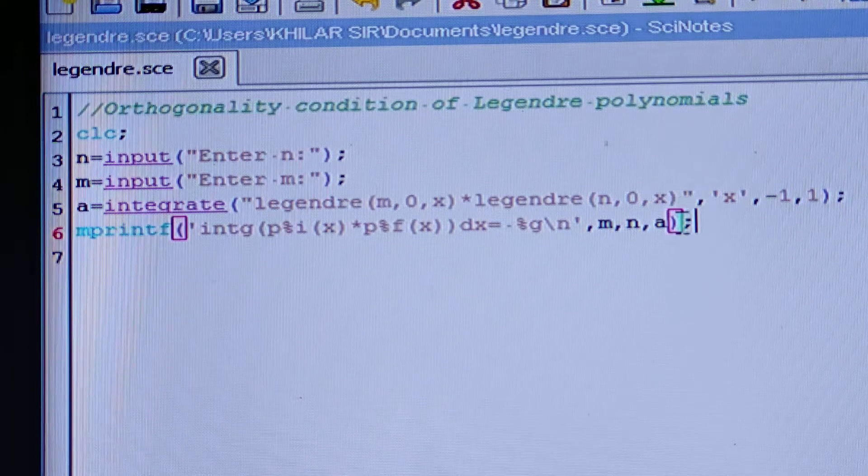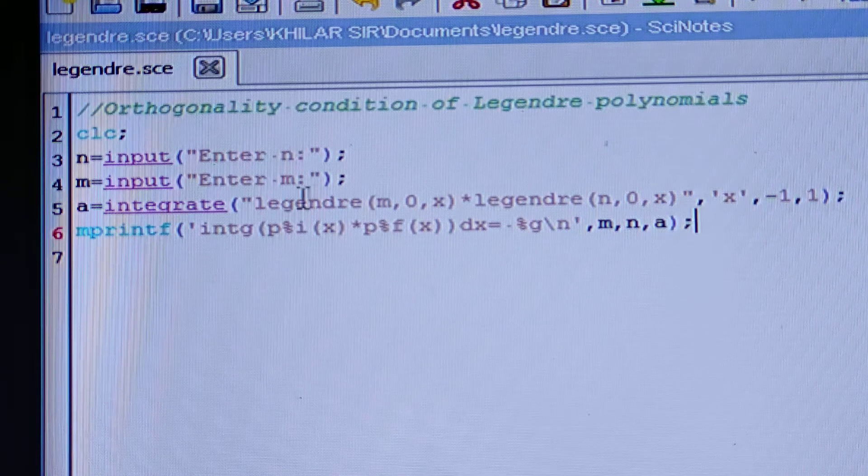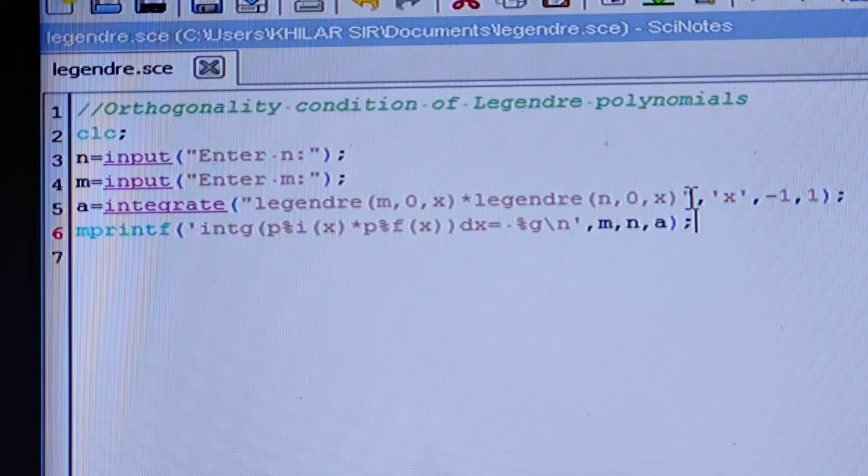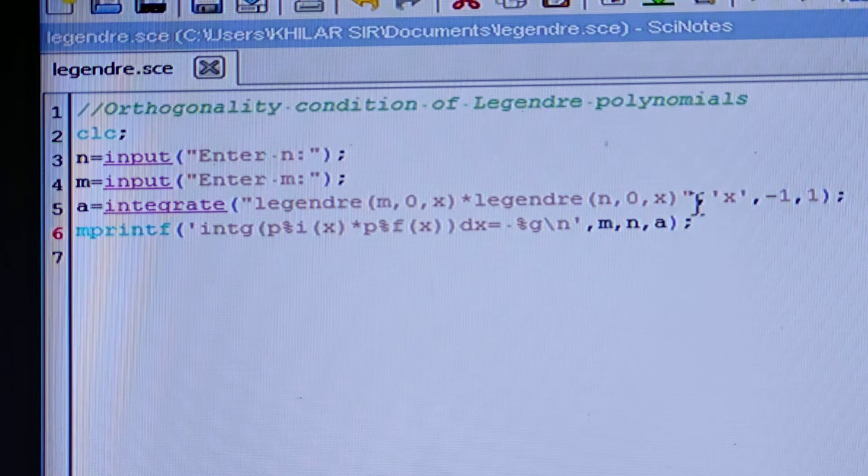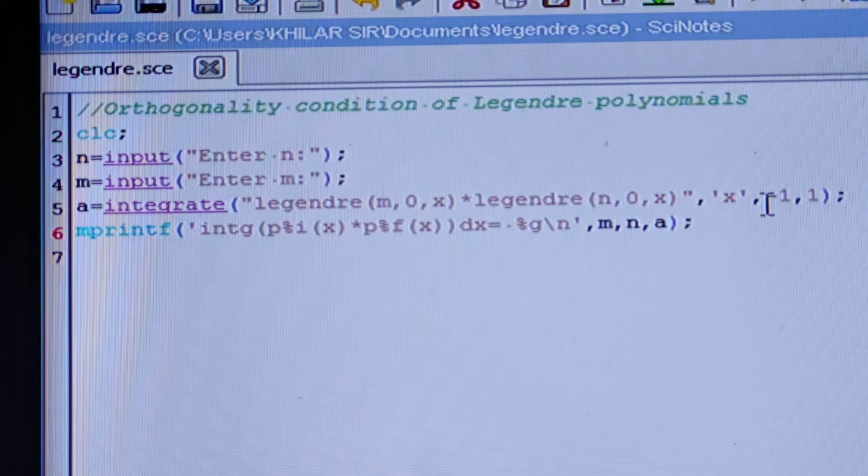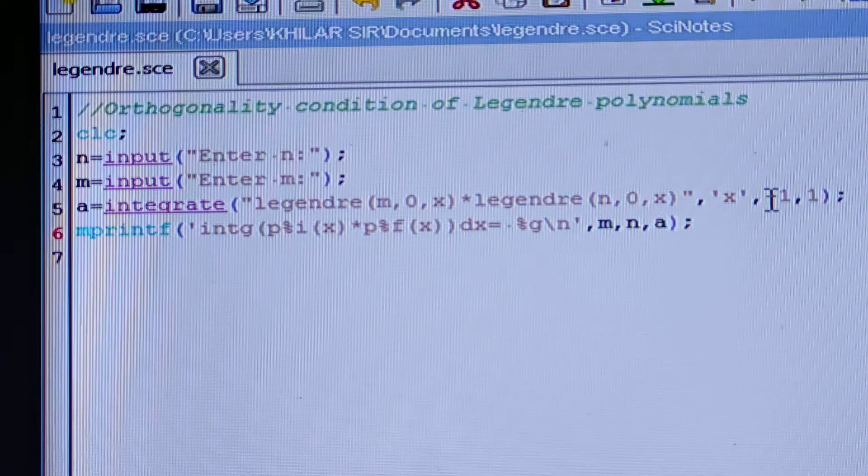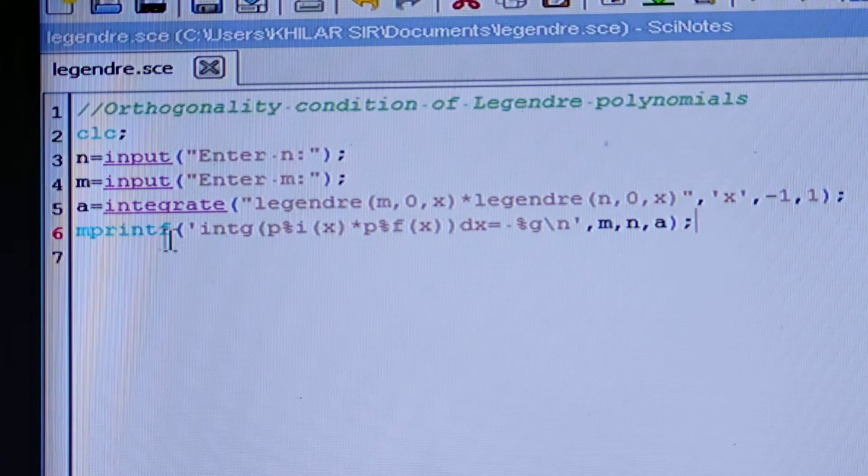And now we should integrate with respect to X. See here, I have written this legendre(N, 0, X) multiplied by this one with a double inverted comma, then comma X. X would be written within single inverted comma because you are integrating with respect to X, and you have to write the limits - first of all lower limit, then upper limit. Lower limit is minus 1, upper limit is 1.